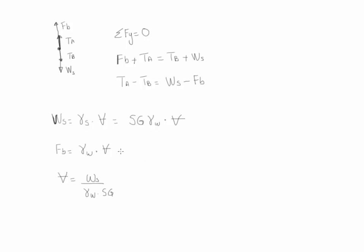Therefore, in order to calculate the weight, we substitute it here. So we have gamma water times the volume, weight of the sinker, gamma of water times SG. And notice how the gamma of water cancels.